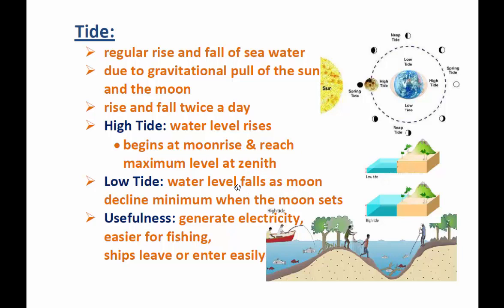The tide is at its minimum when the moon sets. From the diagram, it is at very low tide at the point where the moon has set. So there are high tides and low tides, and these tides are very useful — especially for generating electricity.